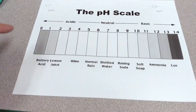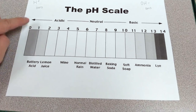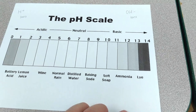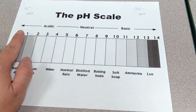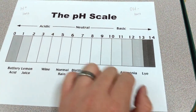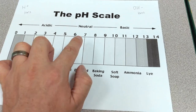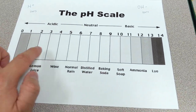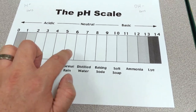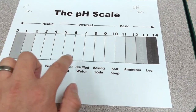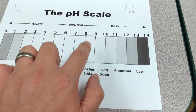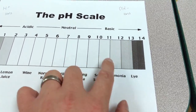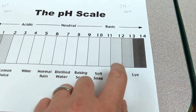pH is used to measure, generally speaking, how acidic or how basic a substance is. The pH scale goes from 0 to 14, with 7 being neutral. A strong acid is going to be closer to 0, a weak acid is going to be around 3 to 4, a weak base is going to be between 8 and 11, and then a stronger base is going to be closer to 11 to 14.